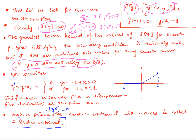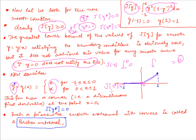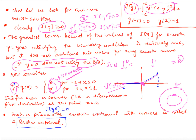Consider the piecewise solution: y* = 0 for x ∈ [-1, 0] and y* = x for x ∈ [0, 1]. This solution has a corner at x = 0. Computing the integral: in the first part y = 0, and in the second part y' = 1, so 1 - y'² = 0, giving a value of 0. Therefore j[y*] = 0, which is the minimum possible value, so y* is our extremal — but it is not smooth.